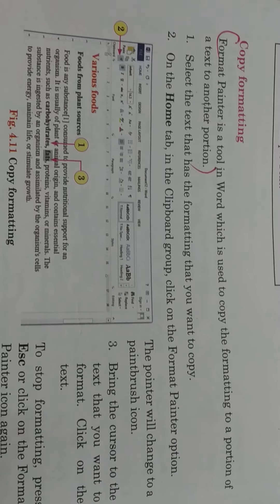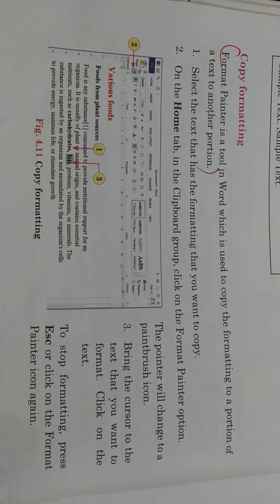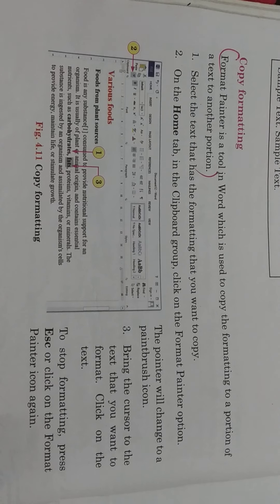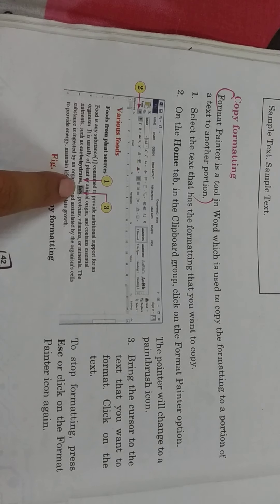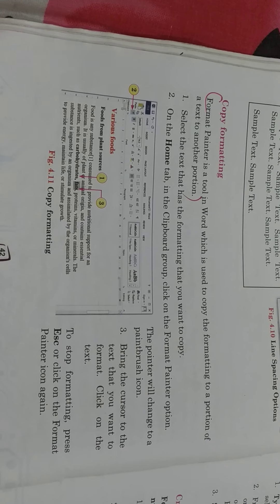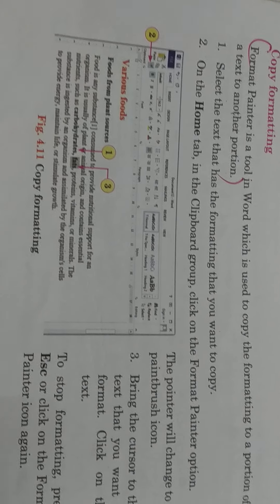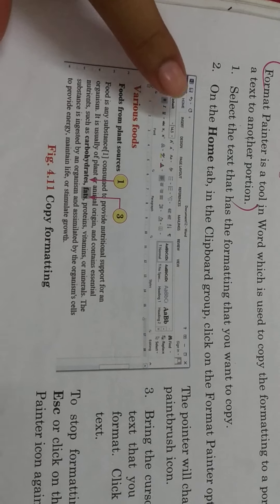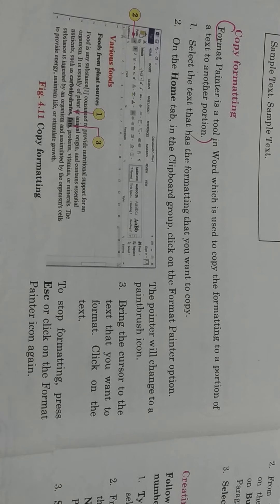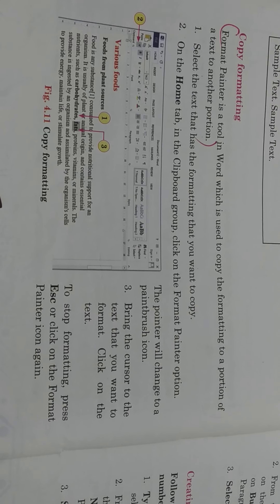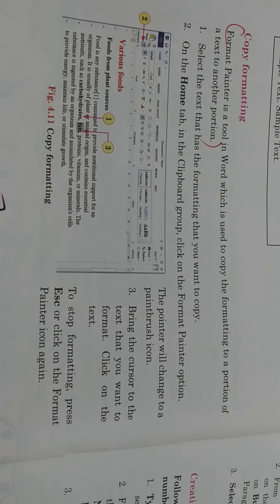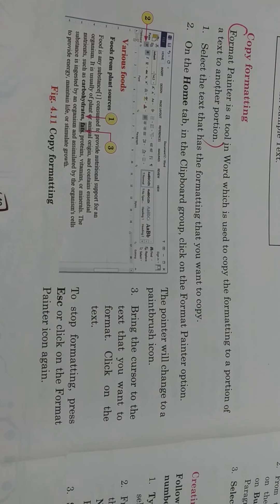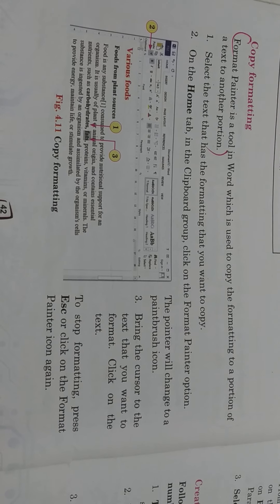Then is copy formatting. Format Painter is a tool in Word used to copy the formatting from one portion of text to another portion. Select the text — a color highlight will appear showing the selection. On the Home tab, in the Clipboard group, click the Format Painter option. The pointer will change to a paintbrush icon. Then bring the cursor to the text that you want to format and click on it. To stop formatting, press the ESC key from the keyboard.